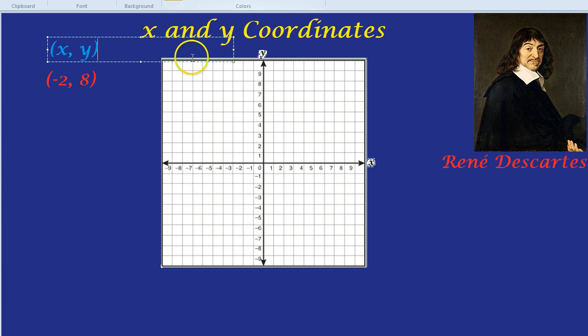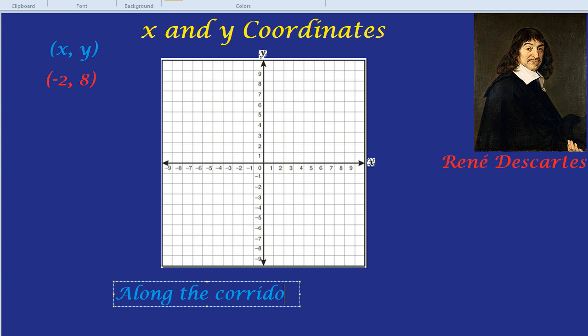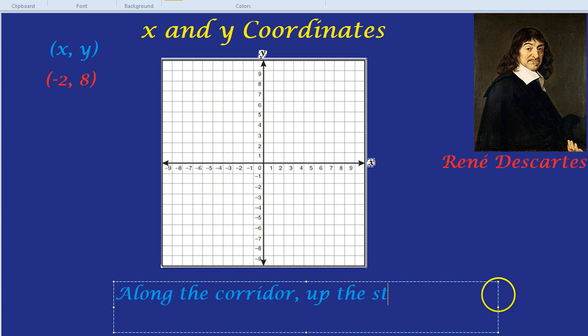But how would we plot (-2, 8)? The trick I like to remember is along the corridor and up the stairs. Along the corridor, the x-axis, and up the stairs, the y-axis. I don't know why we're going along the corridor and what is up the stairs but we'll find out.